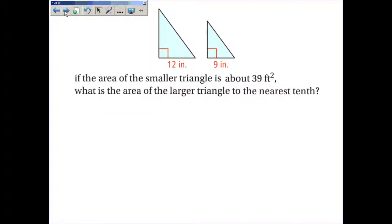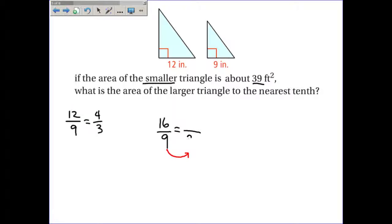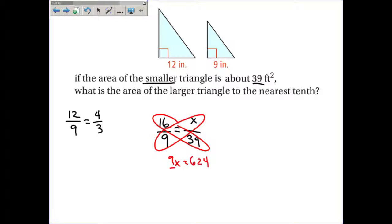A similar problem: if the area of the smaller triangle is about 39 square feet, what is the area of the larger triangle? The ratio of the side lengths is 12 over 9, which simplifies to 4/3. Squaring that gives 16/9 as the ratio of the areas. Setting up the proportion: 16/9 = x/39. Cross-multiplying: 16 × 39 = 624 = 9x, so x = 624 ÷ 9 ≈ 69.33 square feet.